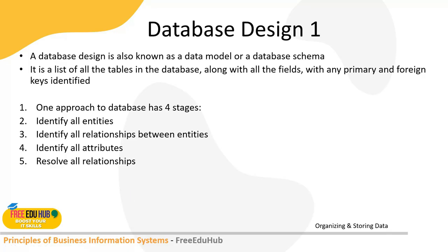Database design, also known as a data model or database schema, is the list of all tables in a database along with their fields, with primary and foreign keys identified. The database schema defines the structure — what the entities are, what relationships exist, and what attributes are included. One approach to database design has four stages: identify all entities, identify all relationships between entities, identify all attributes, and resolve all relationships.